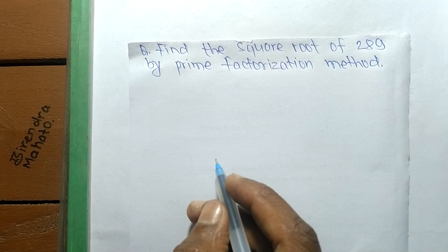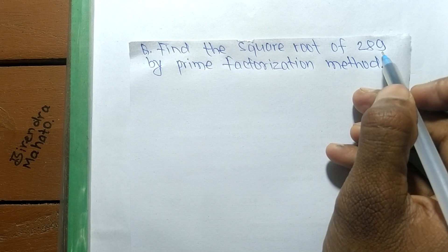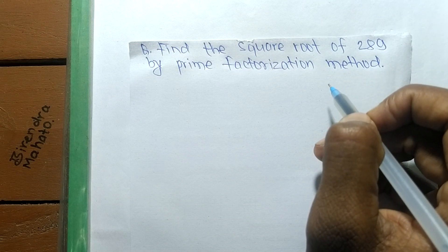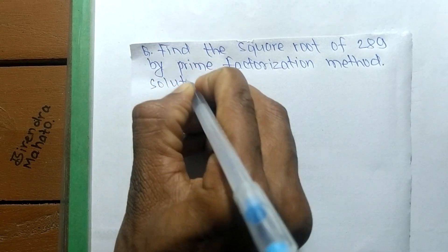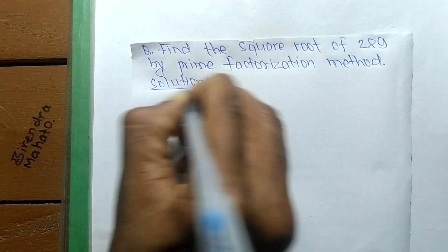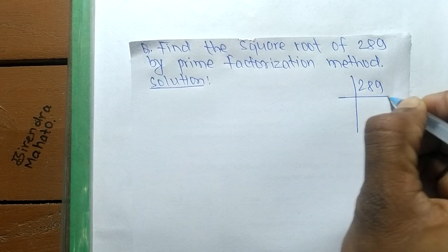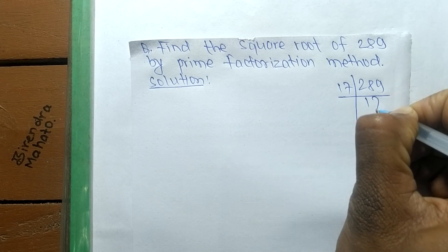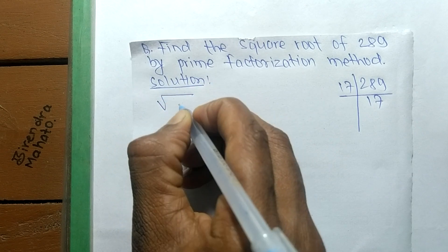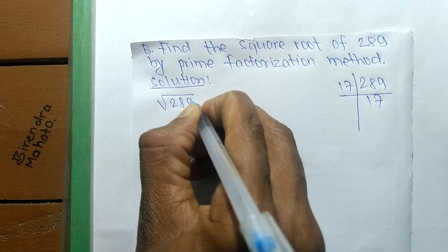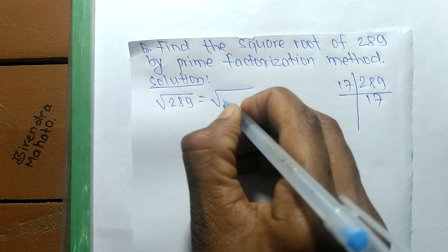Today we shall learn to find the square root of 289 by the prime factorization method. First, we find the prime factors of 289. Its prime factors are 17 times 17, which equals 289. So the square root of 289 can be written using these prime factors.